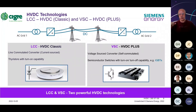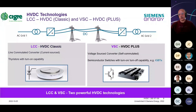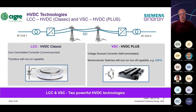In LCC, voltage polarity reversal is achieved either by changing the firing angle of the thyristors or by using polarity reversal switches. This creates complications in multi-terminal schemes, which require special polarity reversal switches. For point-to-point connections, however, power direction can be simply changed by adjusting the firing angles, without needing polarity reversal switches.